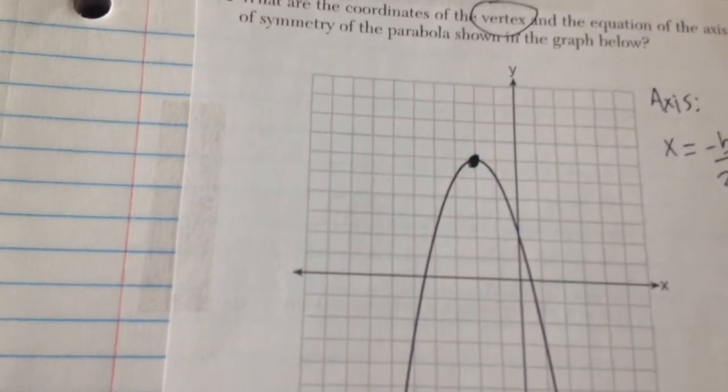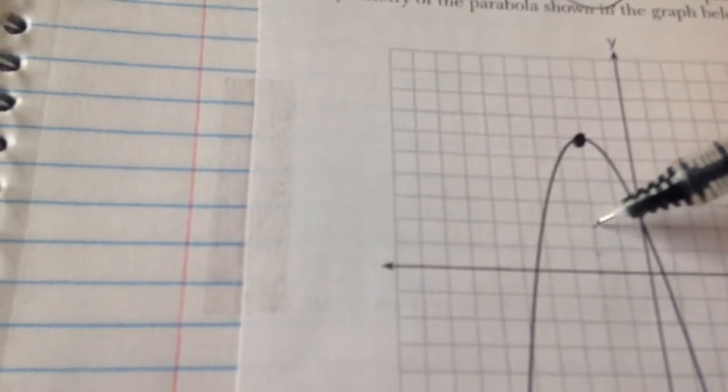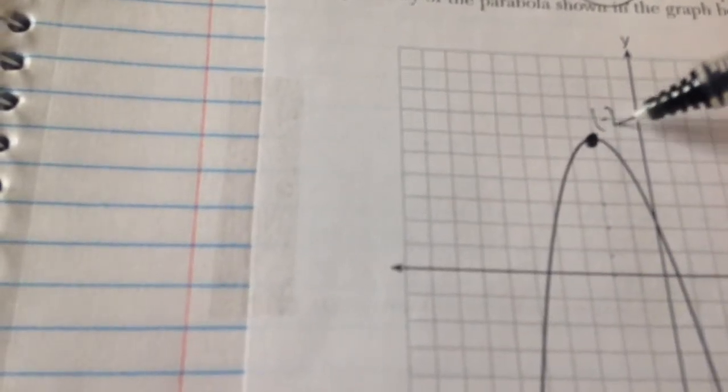In this case this is my vertex. The coordinates of that point is 1, negative 2, 1, 2, 3, 4, 5, 6. It's negative 2, 6.